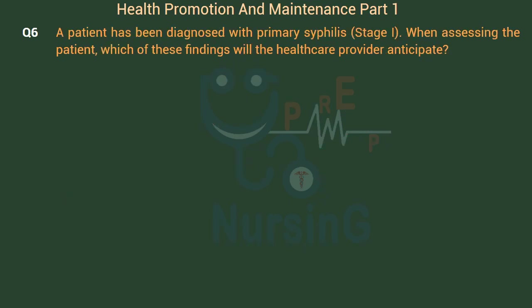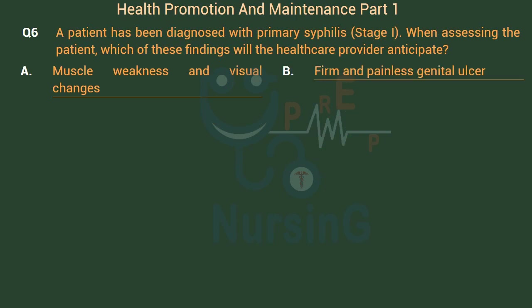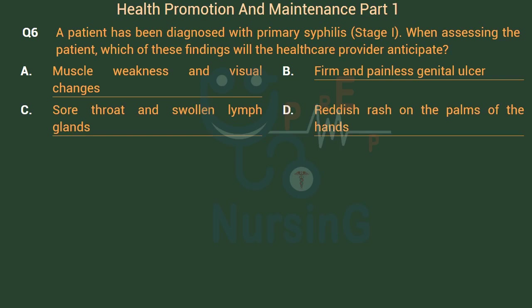A patient has been diagnosed with primary syphilis, stage I. When assessing the patient, which of these findings will the healthcare provider anticipate? Option A: Muscle weakness and visual changes. Option B: Firm and painless genital ulcer. Option C: Sore throat and swollen lymph glands. Option D: Reddish rash on the palms of the hands.